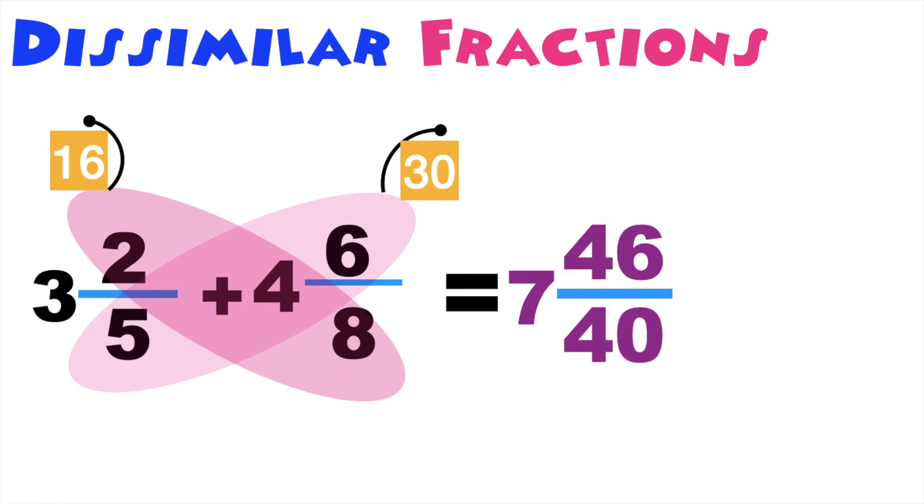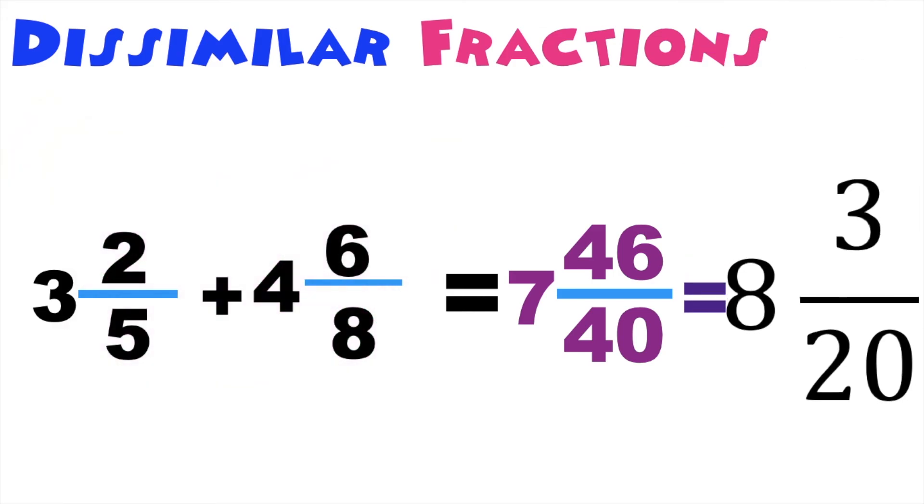So we have 7 and 46 over 40. Let's write it in lowest terms. We have 8 and 3 over 20.